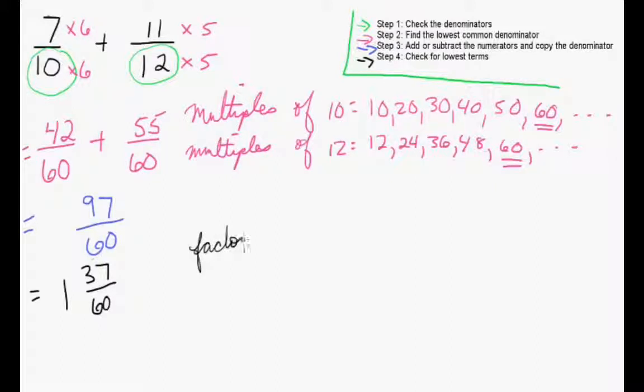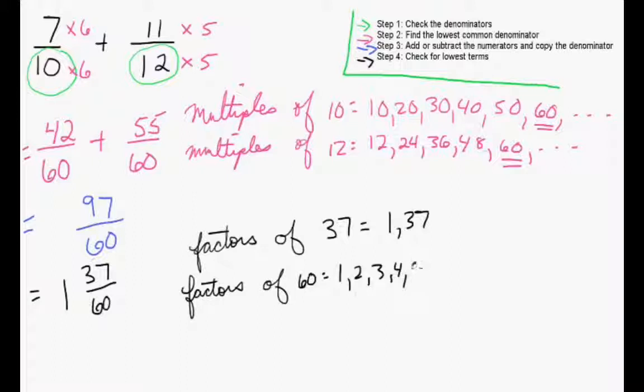In order to do that, we're going to list the factors of each, just like we've done all the other exercises. So the factors of 37 are 1 and 37. And the factors of 60 are 1, 2, 3, 4, 5, 6, 10, 12, 15, 20, 30, and 60. We can see here in these two lists, the only thing that's common is the 1's. Dividing by 1 is not going to change our fraction. So we can state that 1 and 37 sixtieths is in lowest terms, and that's our final answer.